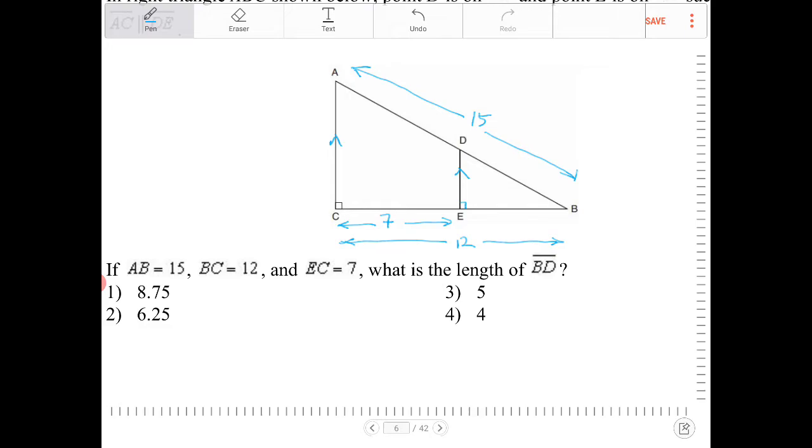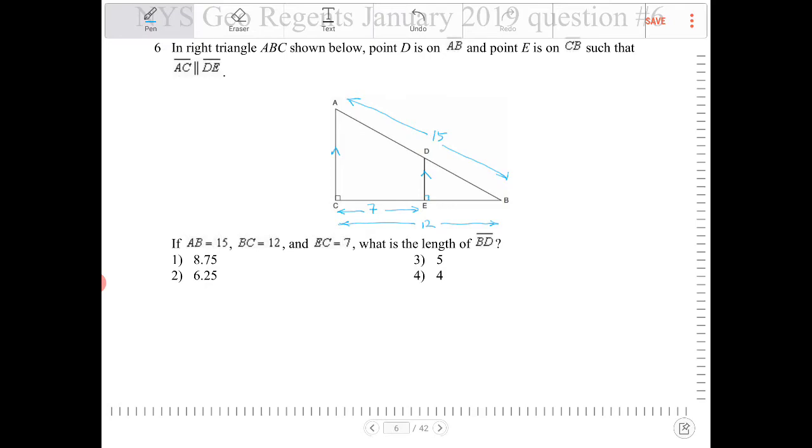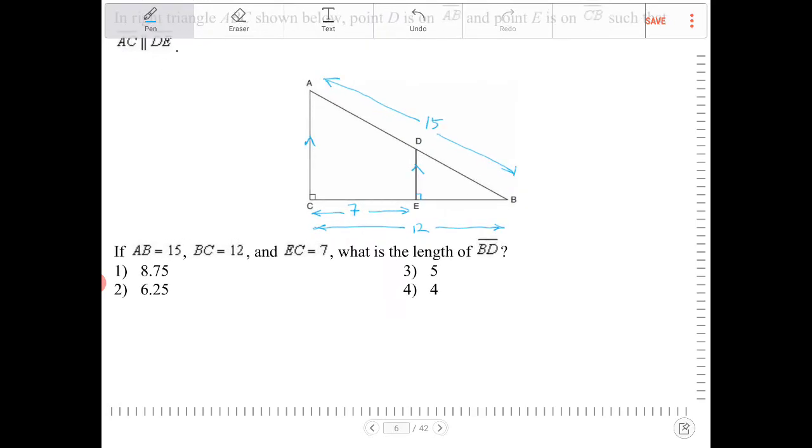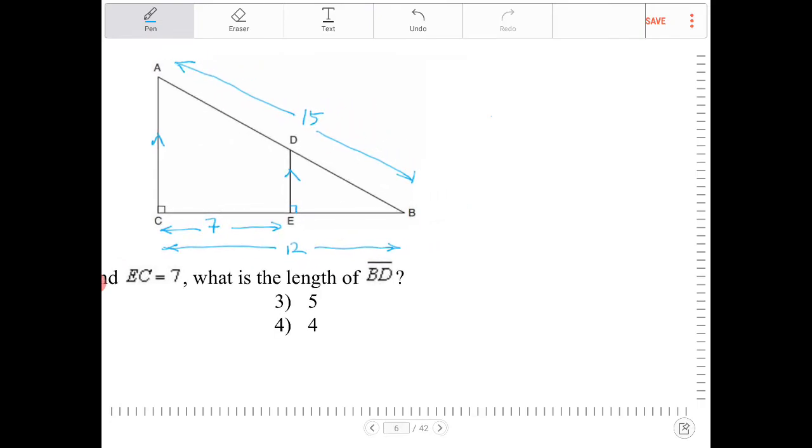What is the length of BD? Okay, so because we have a pair of parallel lines here and those right angles are congruent to each other, the two triangles—triangle DEB will be similar to triangle ACB.